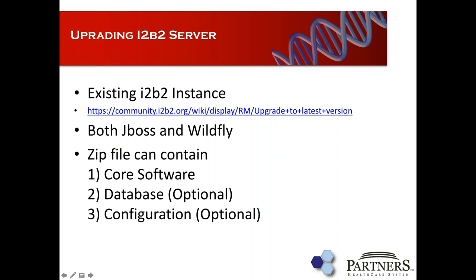For the upgrade script, you can download the update scripts, which support both JBoss and WildFly. When you download the zip file, it will contain the upgraded core software, and optionally, if there were any database updates, there'll be a folder for the database. If there are configuration changes, there'll be a folder for that too. For example, going from 1.7.08 to 1.7.09 there was a configuration change for multi-fact tables, and from 1.7.09 to 1.7.10 there was a database change.